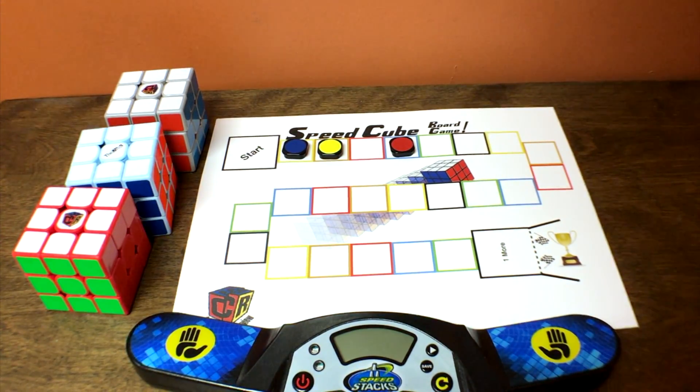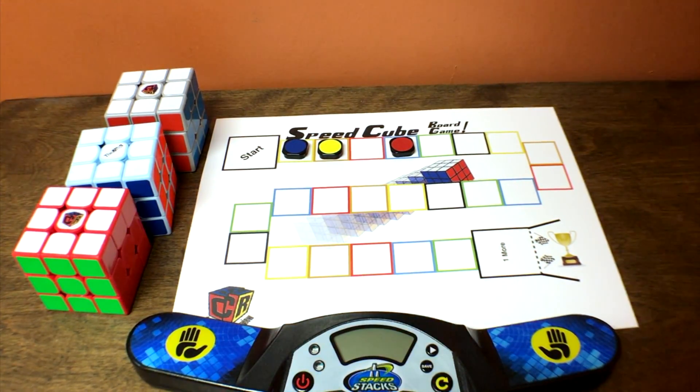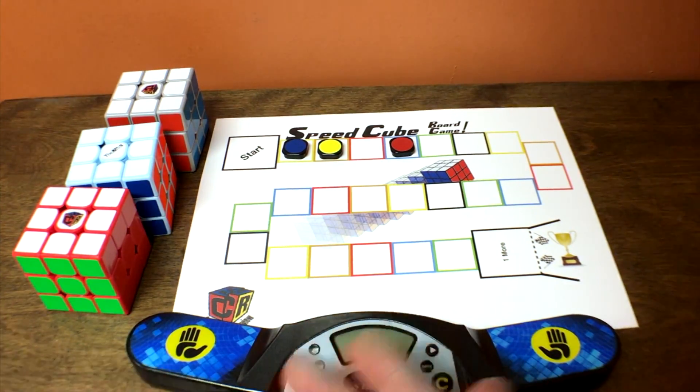Now, I wouldn't suggest just using an average of a hundred, because that's going to take a long time. Unless you want to take a long time, then go for it.